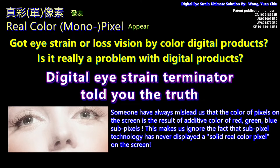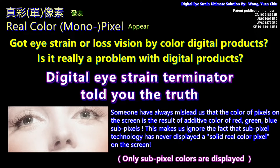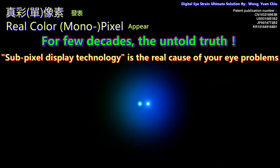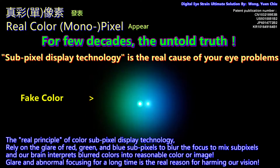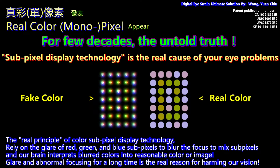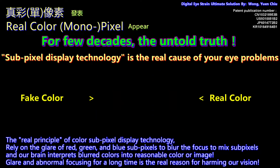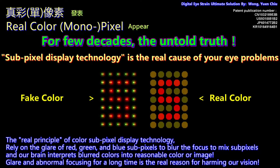Someone has always misled us that the color of pixels on the screen is the result of additive color of red, green, and blue sub-pixels. This makes us ignore the fact that sub-pixel technology has never displayed a solid real color pixel on the screen. Only sub-pixel colors are displayed. The real principle relies on the glare of red, green, and blue sub-pixels to blur the focus, mixing sub-pixels so our brain interprets blurred colors into a reasonable color or image. Glare and abnormal focusing over time is the real reason for harming our vision.